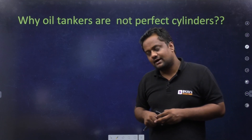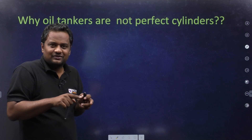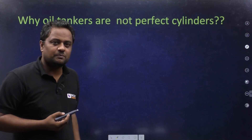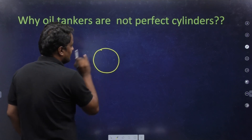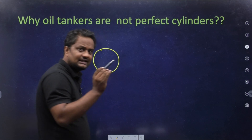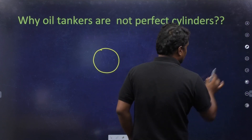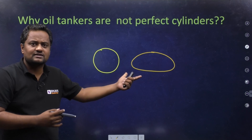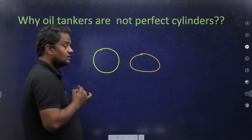Now, why are oil tankers not perfectly cylindrical? They are slightly elliptical in shape. This reason is not widely covered on YouTube or in articles. If it were a perfect cylinder, the cross-section would be a perfect circle. But if it is slightly elliptical — with the major axis horizontal — the shape is a bit flattened. If you see the cross-section of an IOCL oil tanker, it looks something like this.